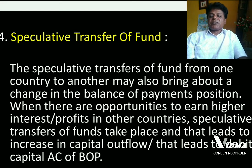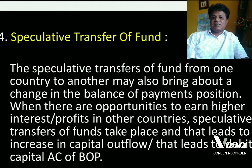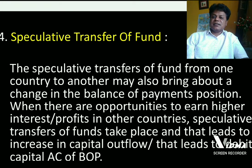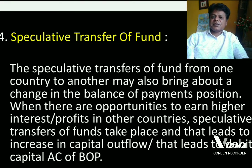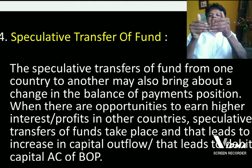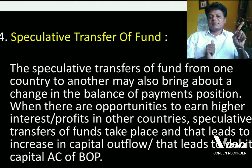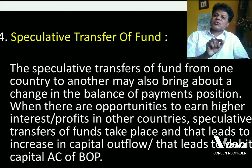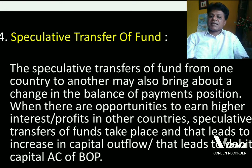The fourth cause for disequilibrium in the balance of payment is speculative transfer of funds. When funds move from one country to another, that will bring disequilibrium in the balance of payment. If funds are moving from our country to foreign countries, it will lead to an increase in debit, and that leads to deficit in the balance of payment.